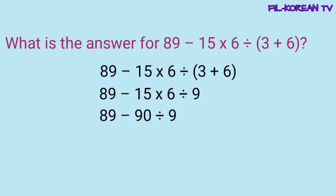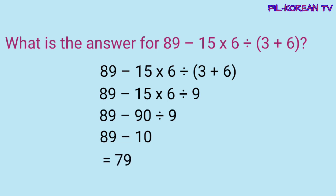Ang natitira na lang ay dalawang operations — minus at divide. Mauuna yung divide: 90 divided by 9 equals 10. Ang last natin i-solve ay yung minus — siya na lang yung natira: 89 minus 10 equals 79. So the answer for this problem is 79.